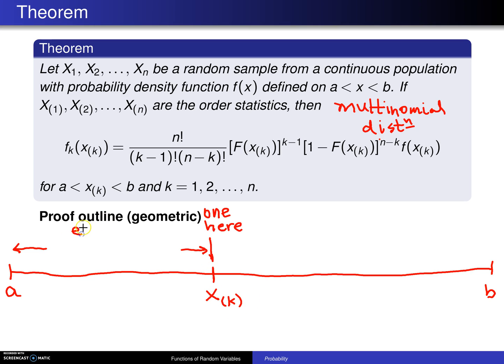you also know that between a and that order statistic, if this is the kth order statistic, then exactly k minus 1 of the observations must fall between a and that kth order statistic. Furthermore, between that kth order statistic and b, exactly n minus k of the observations must fall here.